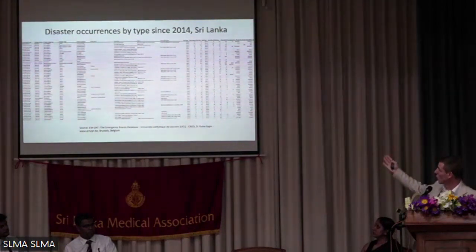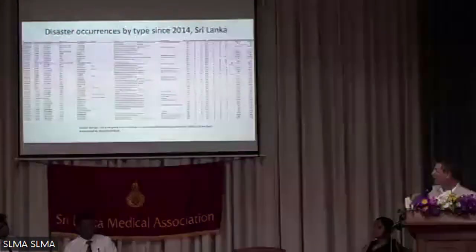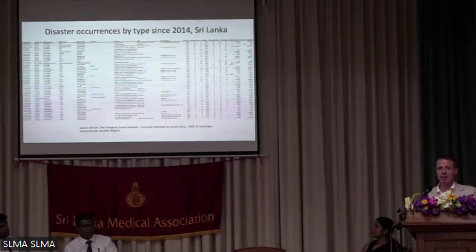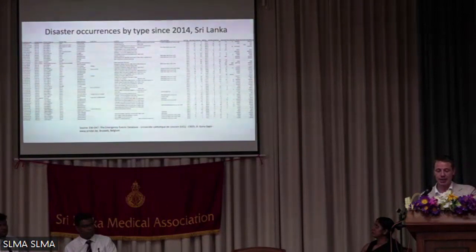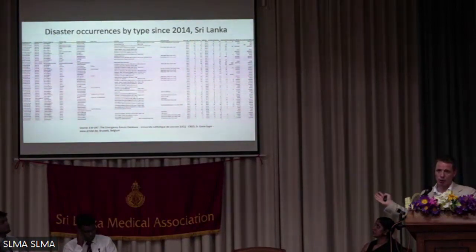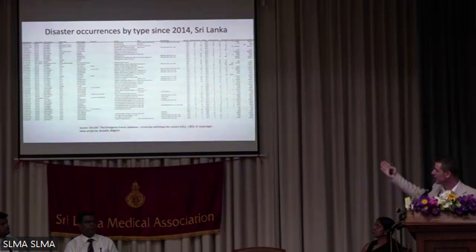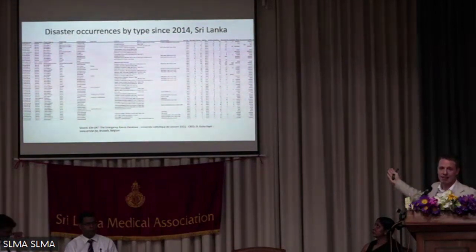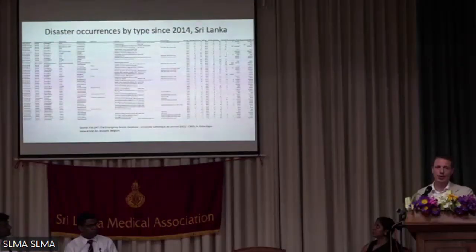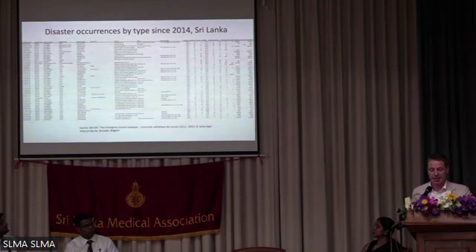If you look at the EMDAT database, which is a common reference point for managing datasets associated with disaster risk, you can look at all disaster occurrences by type reported in Sri Lanka since 2014 and get a sense of all the different individual events and their impacts — you can go and scrutinize that database yourself.